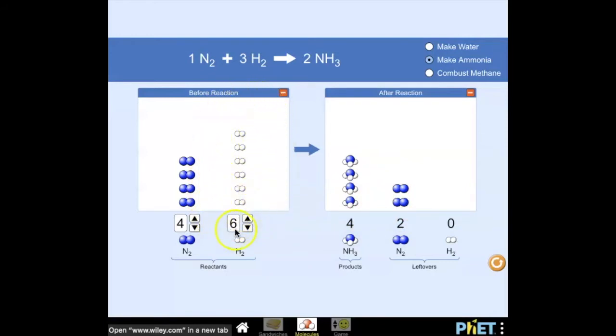This is going to be considered the limiting reagent, and that's something that really confuses students. They'll look at the total numbers and say this one has six and that only has four. Yeah, but the actual ratio required is one to three. Even though there is more hydrogen gas present, there's not enough to make all the ammonia we need to make. These two additional nitrogen molecules are the excess reagent.